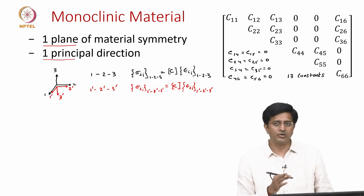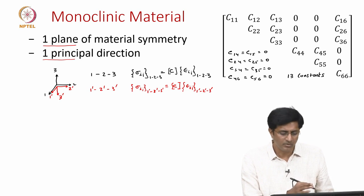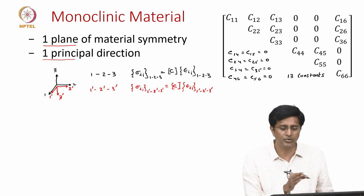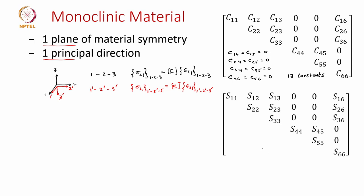We started with 21 independent constants considering the symmetry in stress and strain as well as the availability of the strain energy density function. Now, when we consider the monoclinic material, we get down from 21 to 13 constants. The same thing can also be shown for the compliance matrix — it also reduces to 13 constants. What we achieved with the monoclinic material: these are materials with 1 plane of symmetry, and because of that one plane of symmetry we reduced it to 13 independent constants. Though we discussed monoclinic materials, this has not much benefit with respect to composites because in composites what we actually see is not just 1 plane of material symmetry, but more.